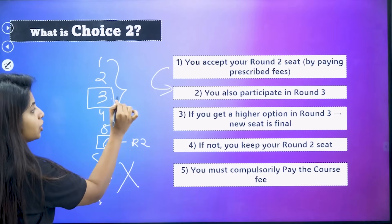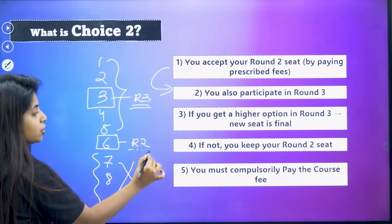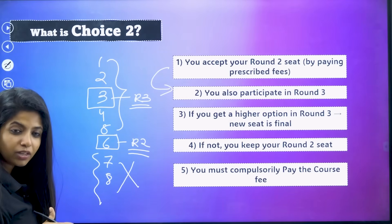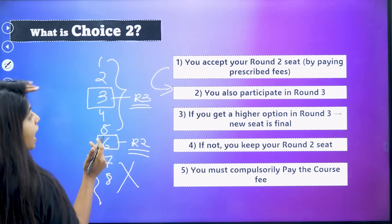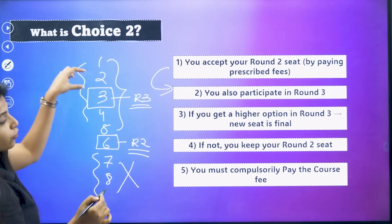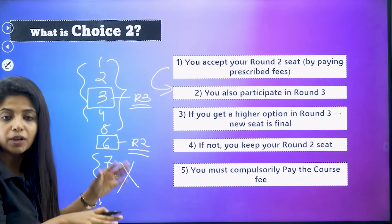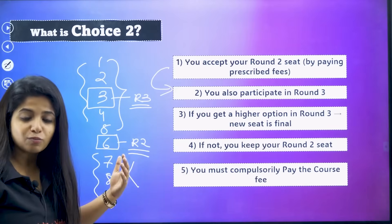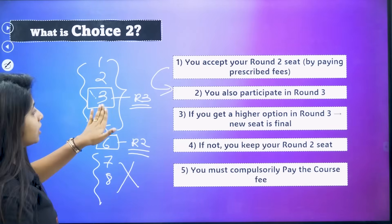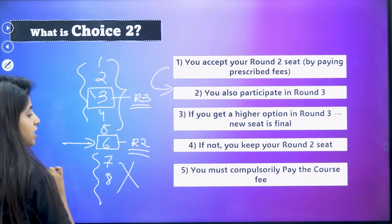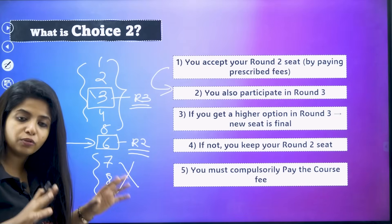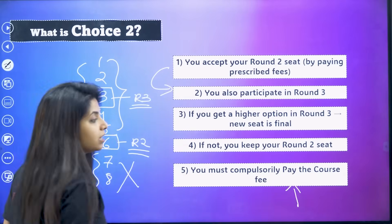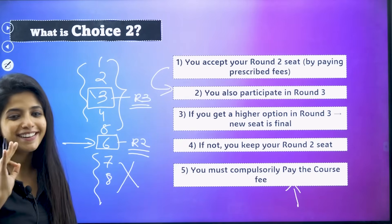Now suppose in round three you got the third college. You might think the sixth college was nice — can you go back to it? The answer is no. If you get a new seat in the higher option, you would have to take it. However, if in round three you didn't get a seat at all, you will still have your sixth college. But since you are keeping it on hold, you would have to compulsorily pay the course fee.